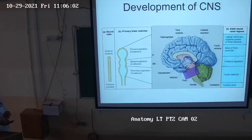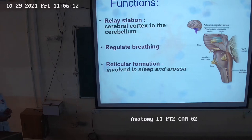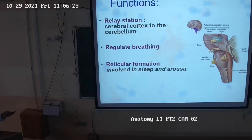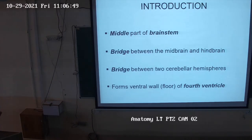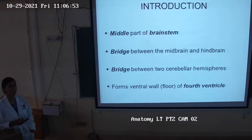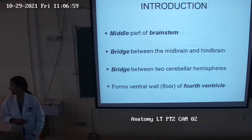The pons lies between the midbrain and the medulla, and ventral to the cerebellum. Its functions include acting as a relay station — relaying fibers from the cerebral cortex to the cerebellum, and passing fibers between the two cerebellar hemispheres. It also regulates breathing; the respiratory center is located in the pons.